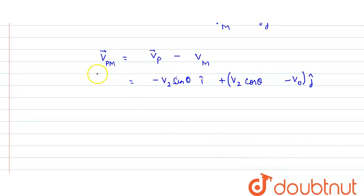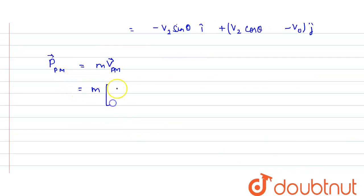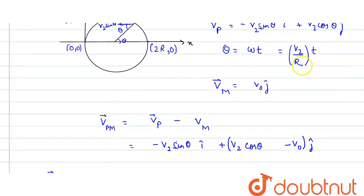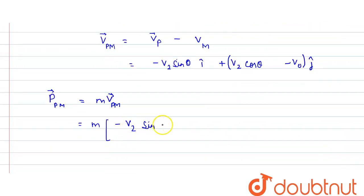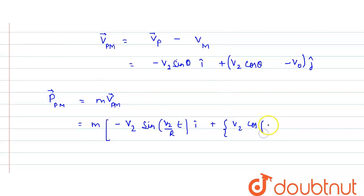The momentum of the particle with respect to the man equals m times the relative velocity. Substituting theta = (v2/r)·t, the final expression is: p = m · [ minus v2 sin(v2t/r) i-cap + (v2 cos(v2t/r) minus v₀) j-cap ]. This is the total relative momentum as a function of time.